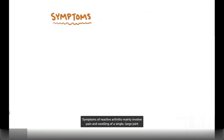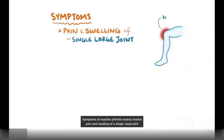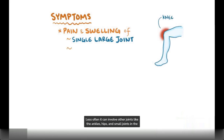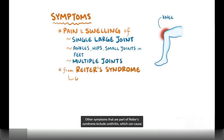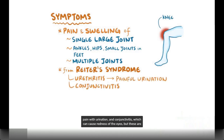Symptoms of reactive arthritis mainly involve pain and swelling of a single, large joint, like the knee. Less often it can involve other joints like the ankles, hips, and small joints in the feet, or affect multiple joints. Other symptoms that are part of Reiter's syndrome include urethritis, which can cause pain with urination, and conjunctivitis, which can cause redness of the eyes. But these are less common.